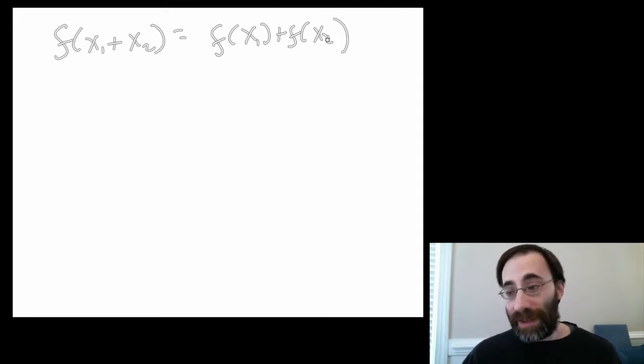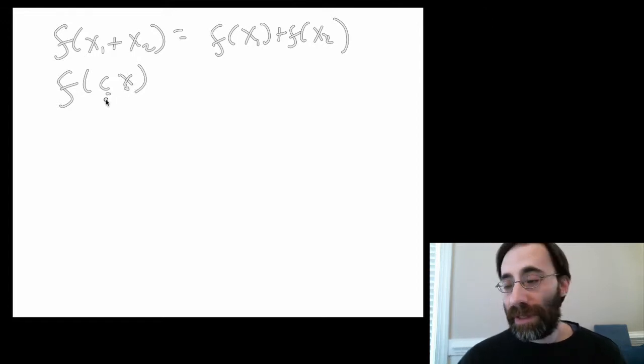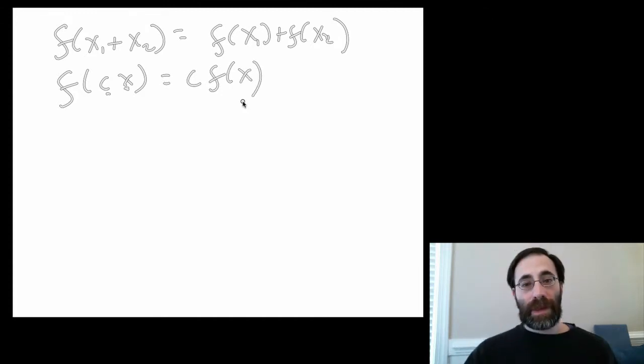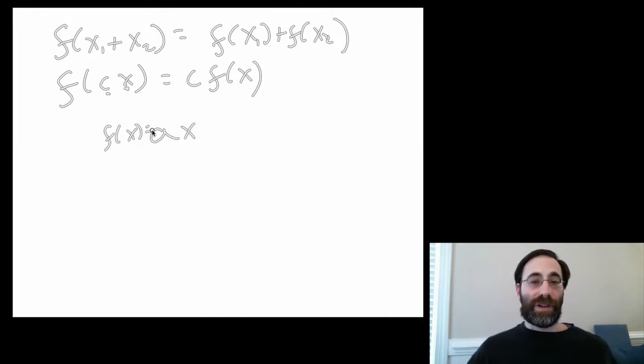The second one was scaling. If we have a function of a variable multiplied by a constant, we can pull out the constant. Now, we said such functions looked somewhat like this. That was a linear function.